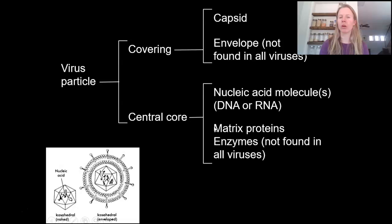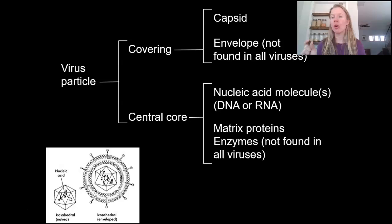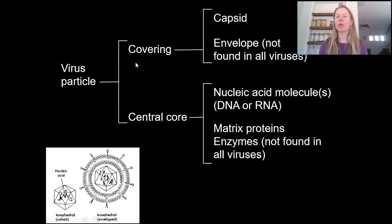Some viruses also carry proteins and enzymes in that central core. For example, not all viruses need enzymes, but HIV is a good example — it actually has an enzyme called reverse transcriptase. Because HIV is an RNA virus, it needs reverse transcriptase so that when it enters a human cell, it can take that RNA and convert it back into DNA, which our cells will then use.